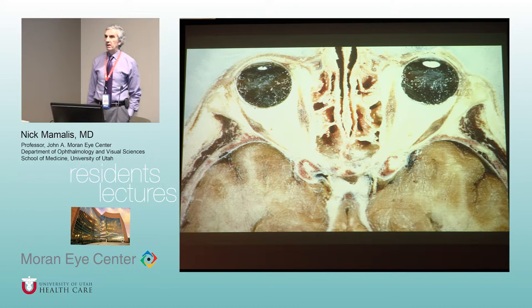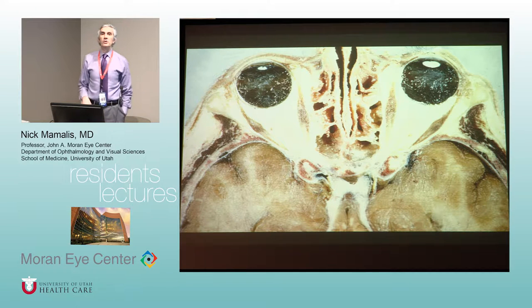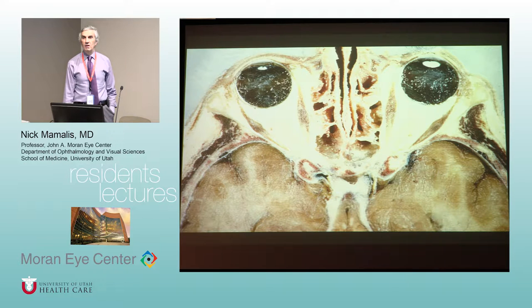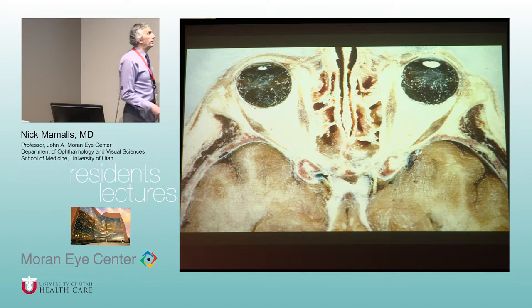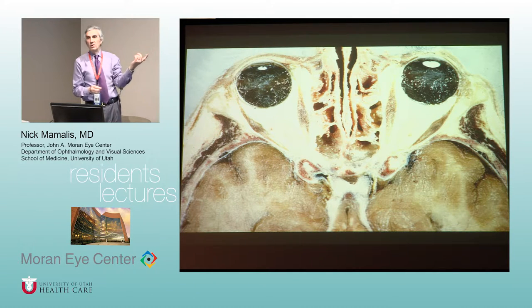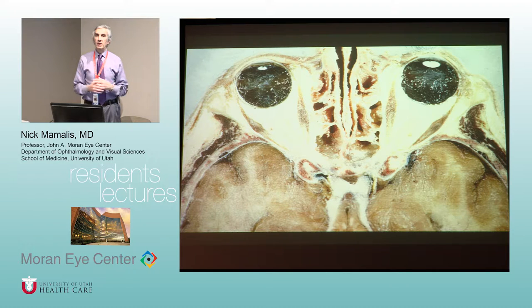When you look at the orbit, it is divided into three main anatomical areas. The orbit is divided into intraconal, extraconal, and subperiosteal — the subperiosteal is a potential space. Intraconal refers to inside the cone formed by the muscles with their intramuscular septum from the apex out to their insertion. Extraconal is what we really think of as the orbit proper, and then there is a potential subperiosteal area.